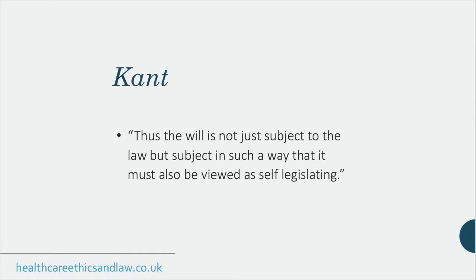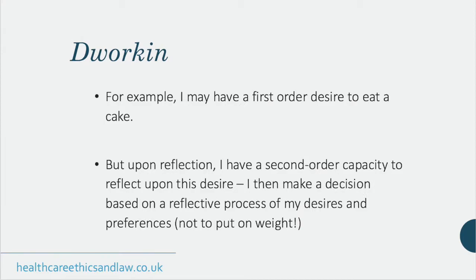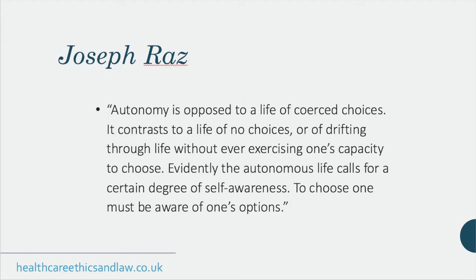Philosopher Gerald Dworkin looks at autonomy from a more functional perspective — it's a capacity we possess: a second-order ability to reflect on first-order desires. For example, I may have a first-order desire to eat some cake at a café, but I might then reflect using this higher-order capacity and think — it looks delicious, but I'm on a diet trying to lose weight — and upon that reflection decide not to eat the cake. So we can think of autonomy as this capacity to reflect on things and incorporate our own preferences and desires into our decision-making.